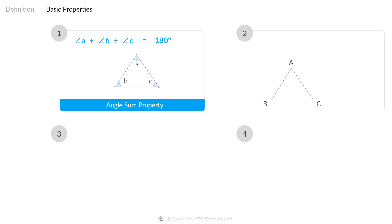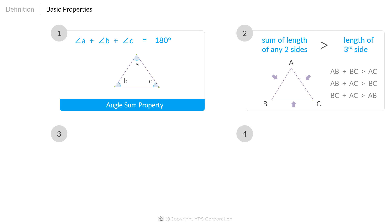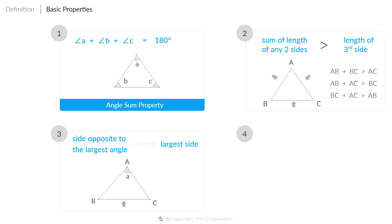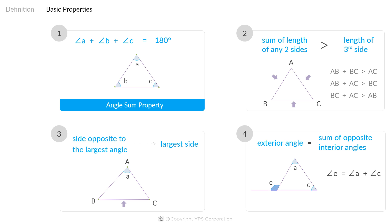Secondly, the sum of the length of any two sides of a triangle is greater than the length of the third side. Thirdly, the side opposite to the largest angle of a triangle is the largest side. And lastly, any exterior angle of a triangle is equal to the sum of its interior opposite angles, also known as the exterior angle property.